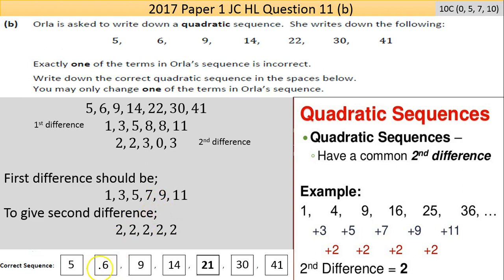So you have 5, which would give the difference between 5 and 6 would be 1, then 6 and 9 would be the 3, 9 and 14 would be the 5. So 14 and 7 should give you the correct figure here. 14 and 7 is 21. Then the next jump there should be 9. So 21 plus 9 is 30, and 30 plus 11 is 41.